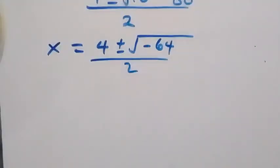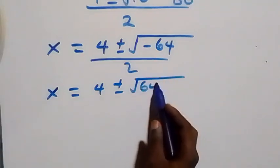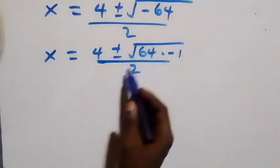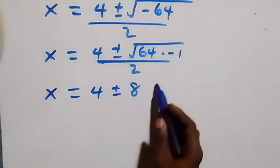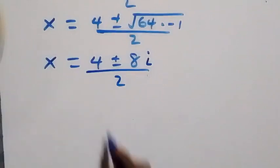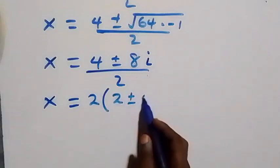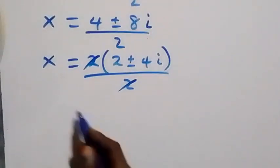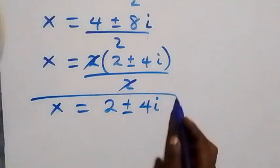We have x equals 4 plus or minus the square root of 64 times minus 1, all over 2. Bringing out the root of 64, which is 8, we have 4 plus or minus 8i, over 2. Since 2 is common, this gives x equals 2 plus or minus 4i. So we have two complex solutions from case one.